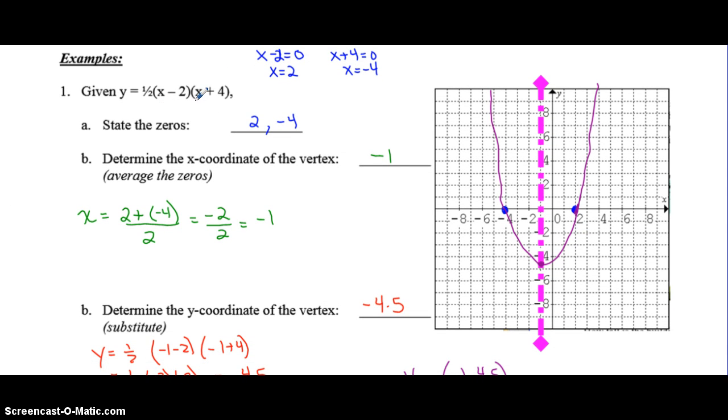So graph using the zeros and the vertex as your last step. So if your equation is in factored form, you pick out the two zeros. Once you have the two zeros, you average them to get the x-coordinate of the vertex. Once you have that, you substitute it into the equation to get the y-coordinate of the vertex.